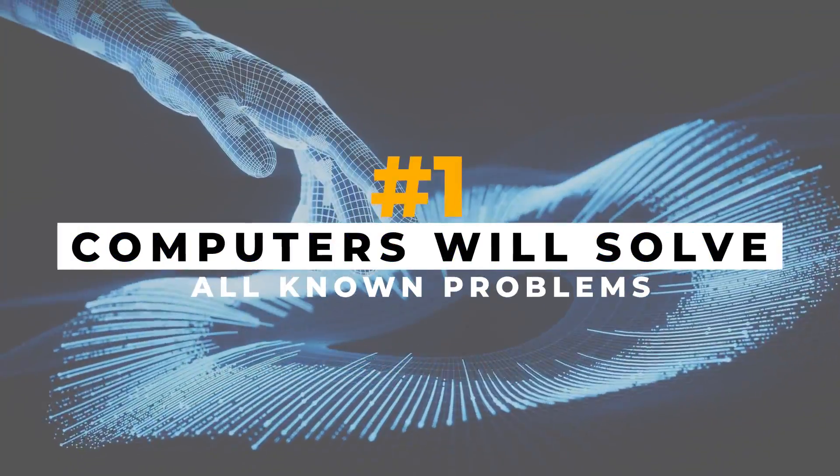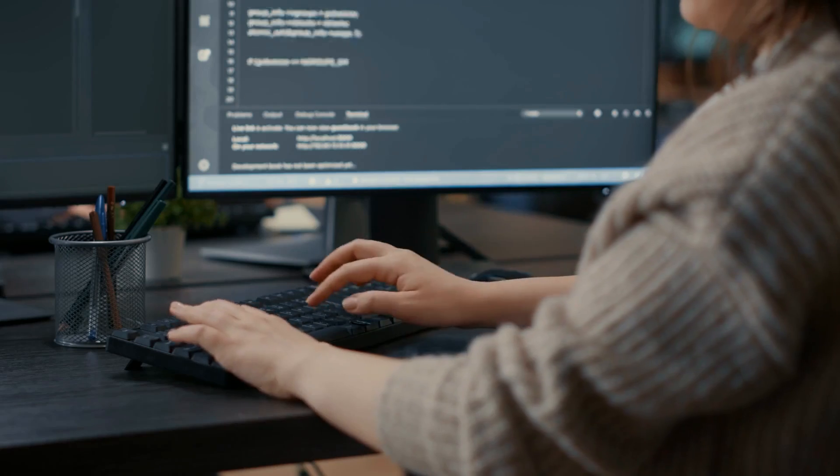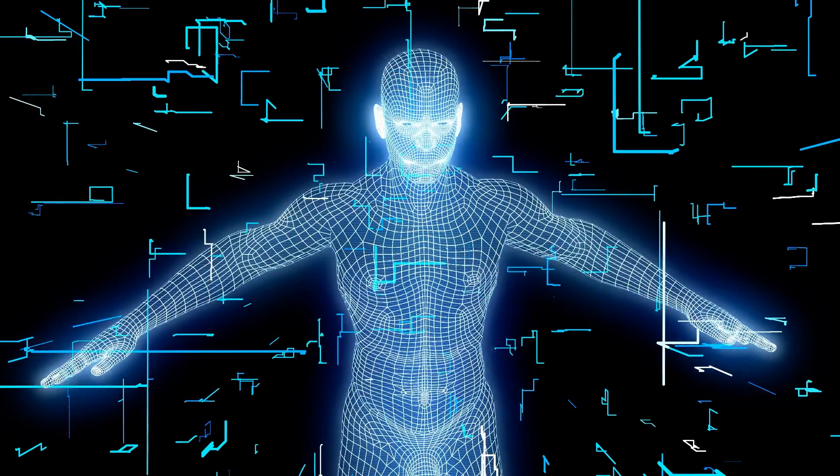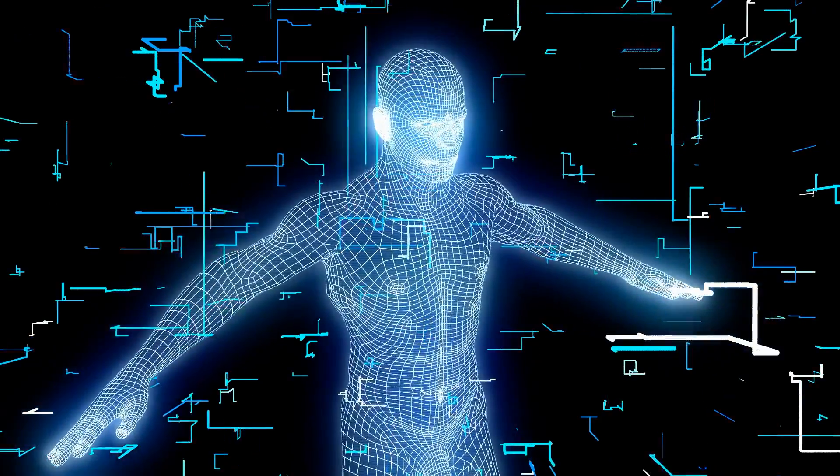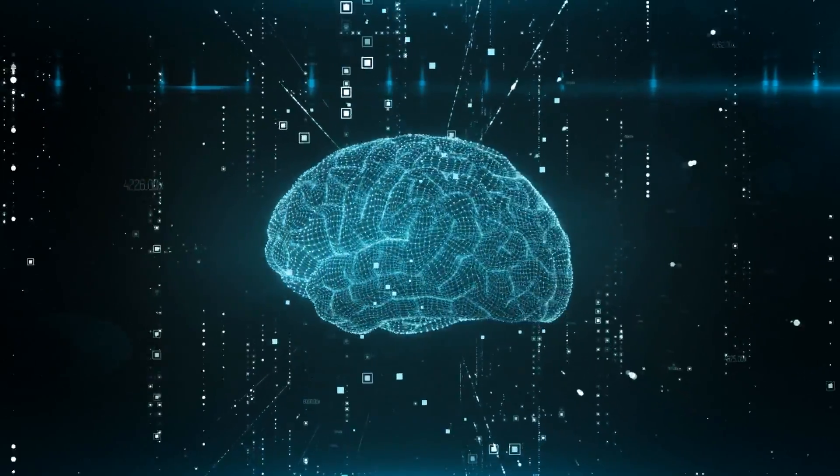Number one: Computers will solve all problems known to the human race. We will create systems and robots which are smarter than us. According to Ray Kurzweil, one of the most known futurists, computers will have the same level of intelligence as humans by 2045, and they will only quickly progress from there.